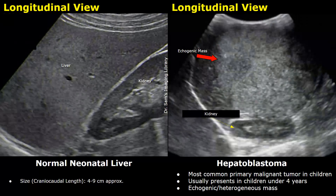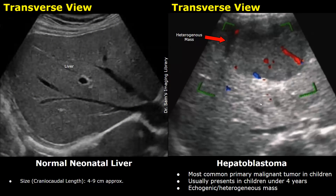This is another case of hepatoblastoma — a large echogenic mass is seen in the liver. In this case, the mass is heterogeneous and somewhat hypoechoic compared to previous images, and some internal vascularity on color Doppler is noted.